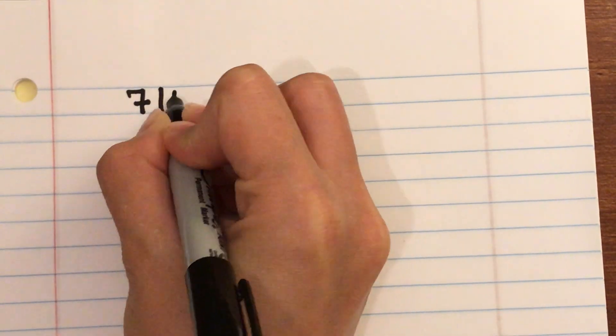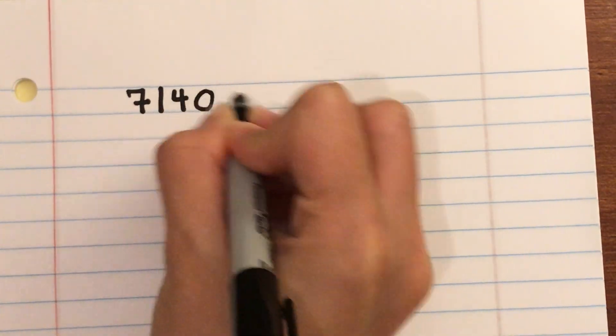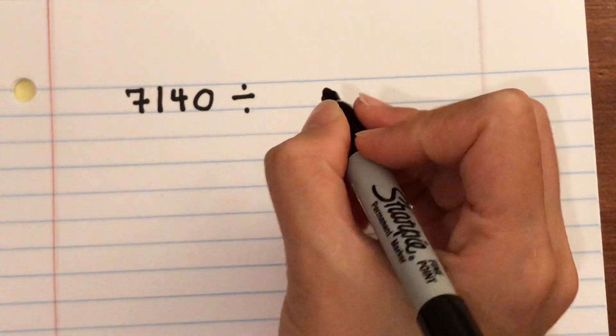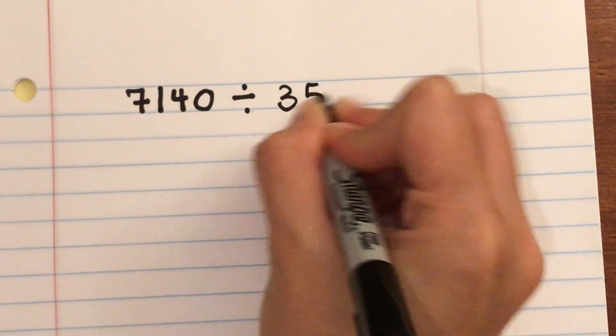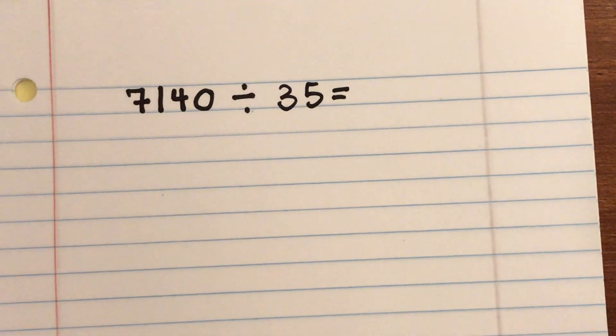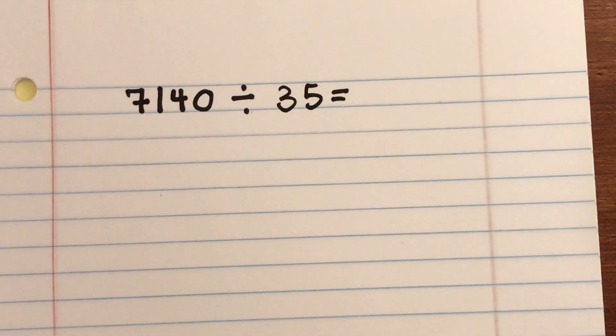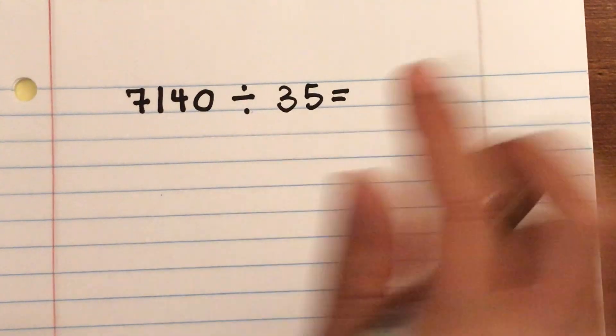Let's do one more example using partial quotients: 7,140 divided by 35. Practice yourself — what are the dividend, divisor, and quotient in this problem?